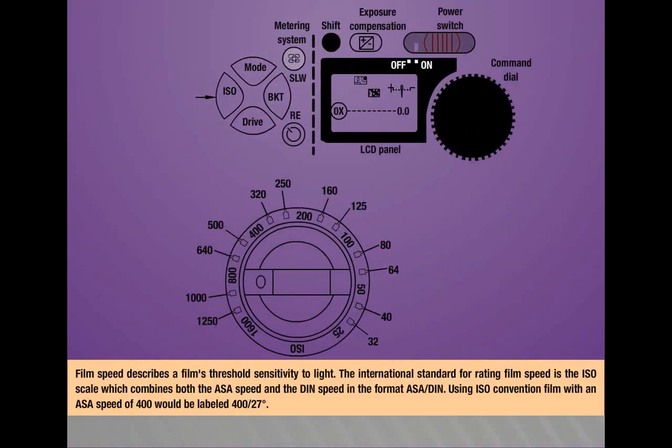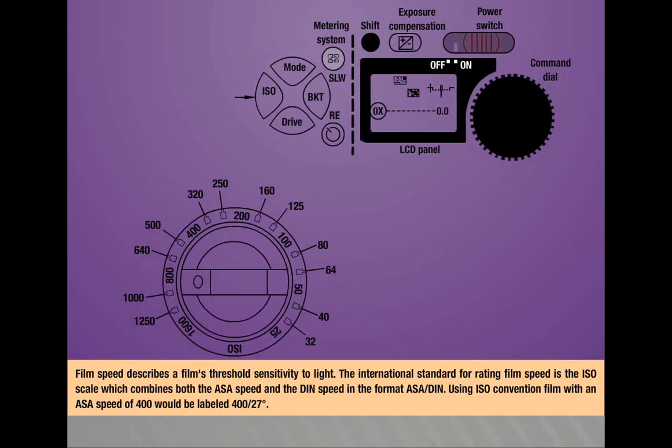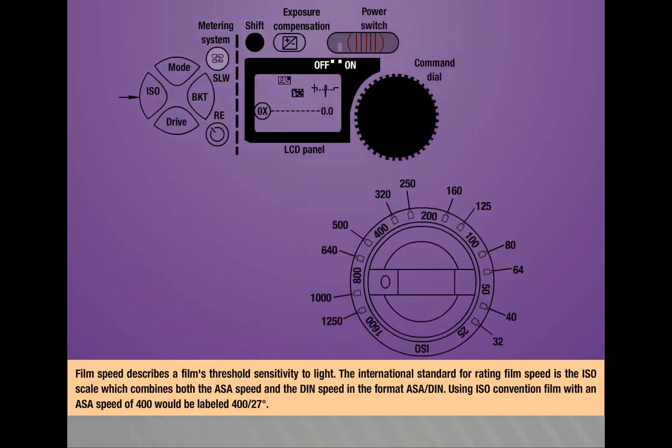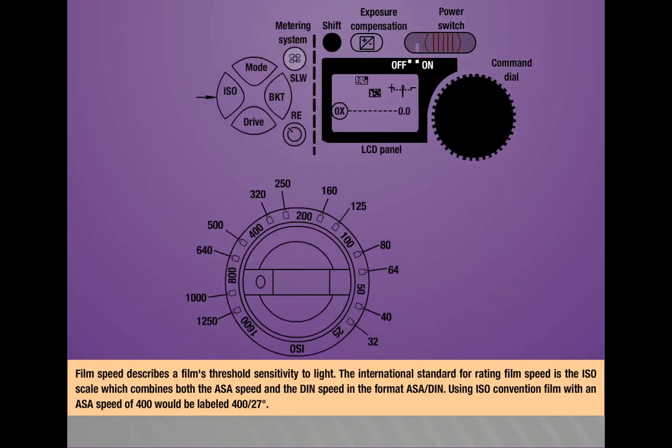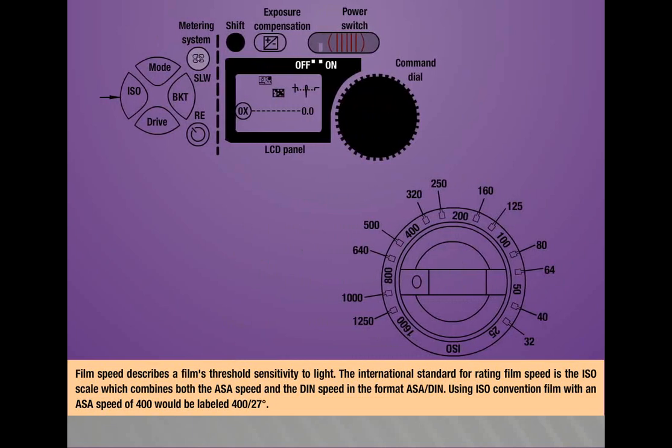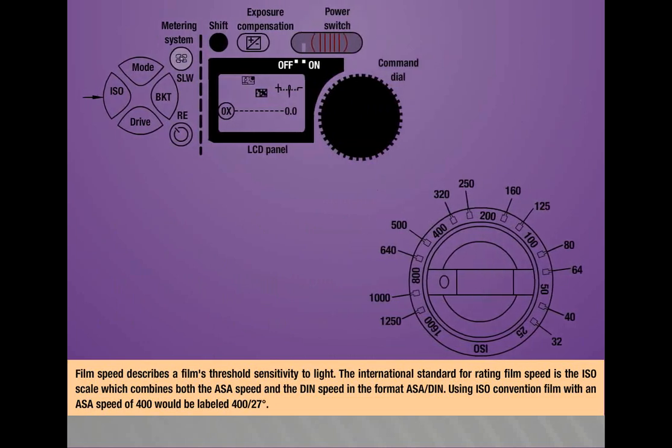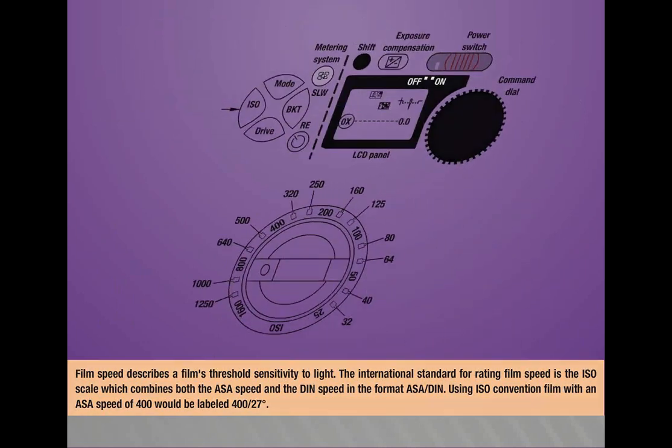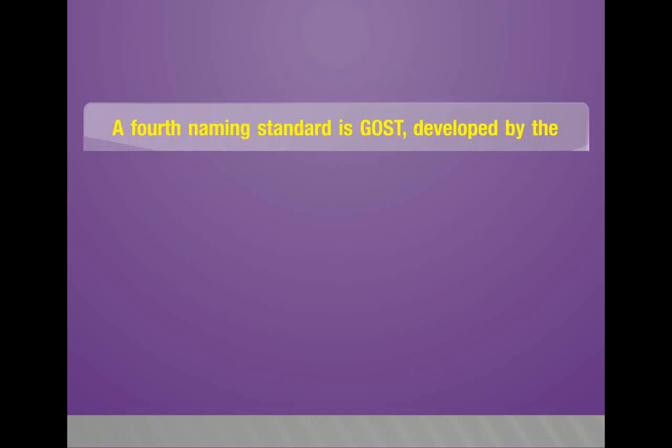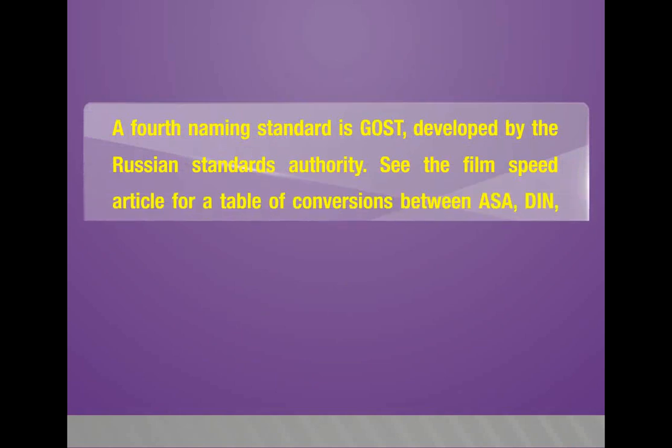Film speed describes a film's threshold sensitivity to light. The international standard for rating film speed is the ISO scale which combines both the ASA speed and the DIN speed in the format ASA/DIN. Using ISO convention, film with an ASA speed of 400 would be labeled 400/27°. A fourth naming standard is GOST, developed by the Russian standards authority. See the film speed article for a table of conversions between ASA, DIN, and GOST film speeds.